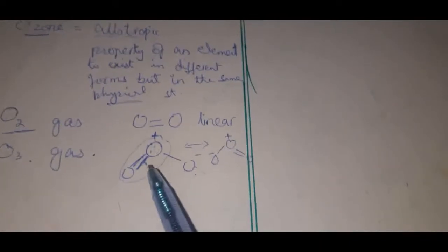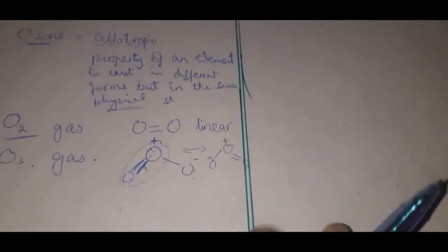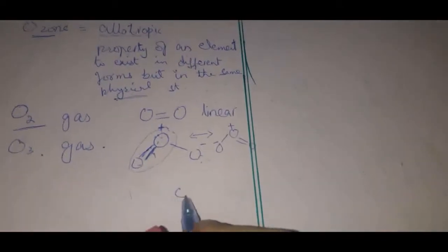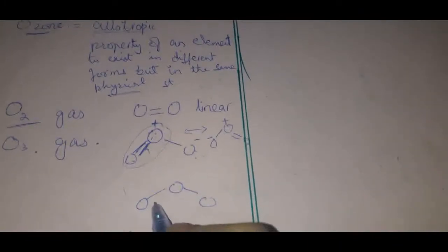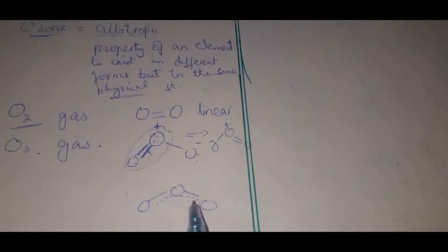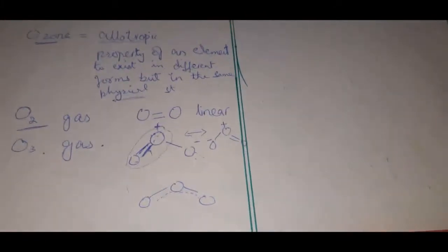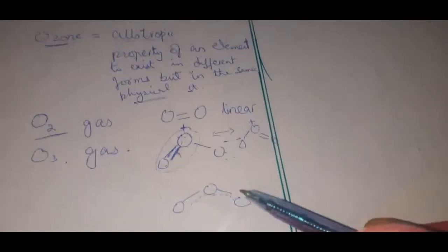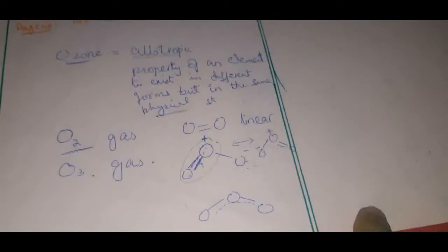Since we cannot identify whether the double bond is on the left or right oxygen, the structure of ozone is usually drawn as O single bond O single bond O with a dotted structure between them, showing the double bond alternates position without any charge shown. This different structure formula is why ozone is the allotropic form of oxygen.